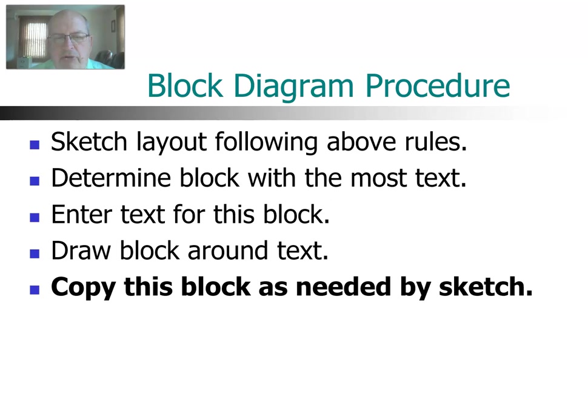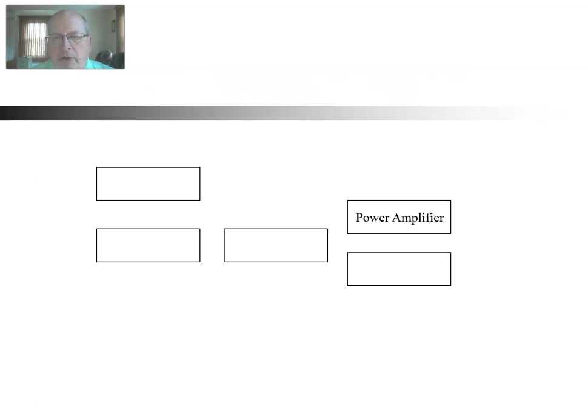The next procedure is to copy this block as many times as needed for your sketch. And the reason why we're doing this copy is remember the rule that all the blocks should be the same size. So if you copy the block, then all the remaining blocks will be identical. That's the reason why we do copy, to make sure all of them are exactly the same size. So there's my Power Amplifier, and I'm going to copy it several times in a rough layout the way I did my sketch there.